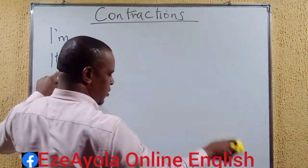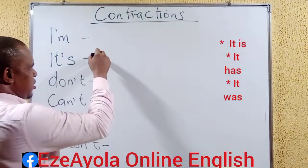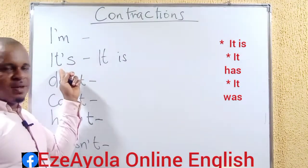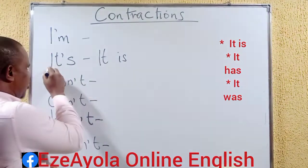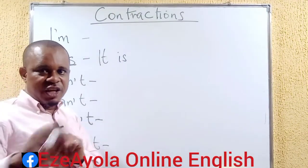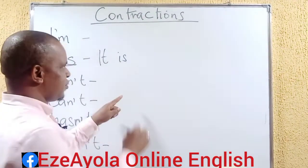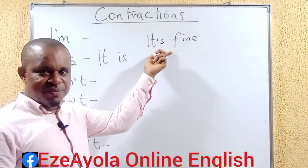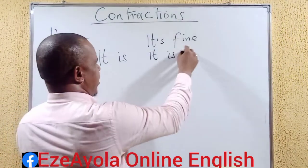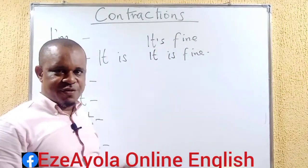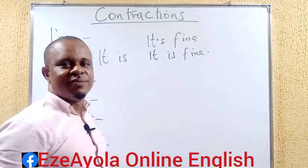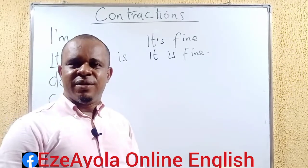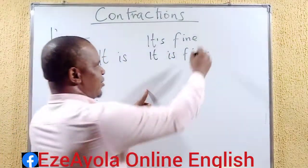What about 'it's'? This word stands for 'it is'. That's the expression, but here it is written as a contracted form — that's what we mean by contraction. Someone could say 'it's fine', and that is the same as 'it is fine.' Whether you write 'it's fine' or 'it is fine', they are both correct. 'It's fine' is the contracted form; 'it is fine' is the full form.